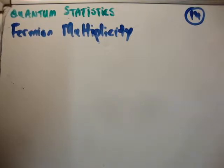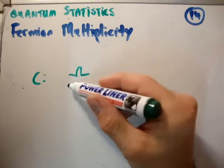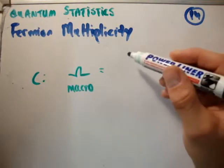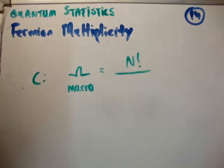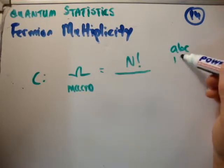When we had classical particles, the macroscopic multiplicity, the maximum macroscopic multiplicity was N factorial. However, we found that for every n_s particles that we picked, we could choose them in different ways. You know, one, we choose that way, or three, two, one.